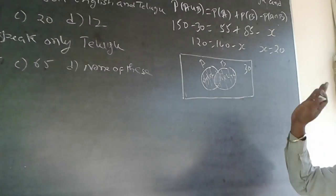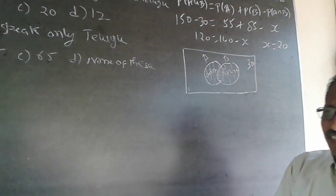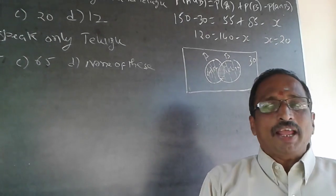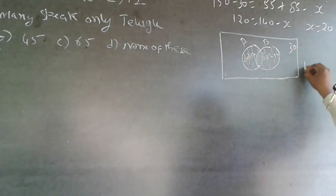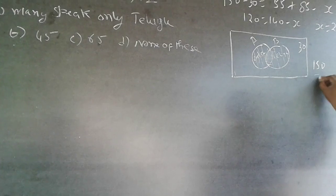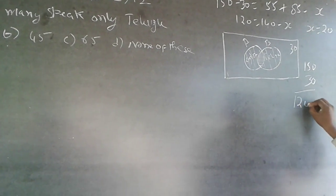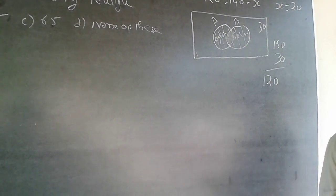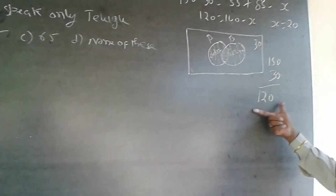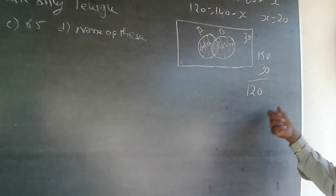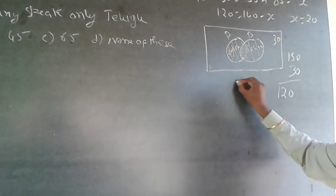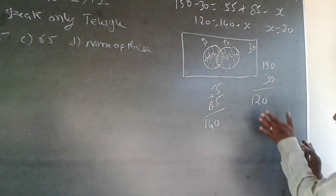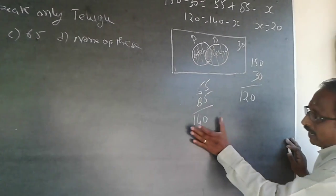Now for the shortcut — without the formula or Venn diagram. Totally 150 students are there, of which 30 have not studied anything, so 150 minus 30 gives 120 students who know either English, Telugu, or both. When you add English and Telugu: 55 plus 85 equals 140. But you can only have a maximum of 120 students.